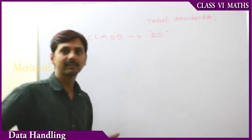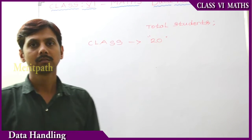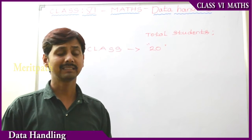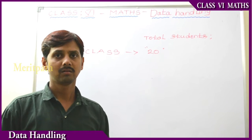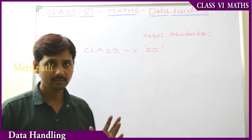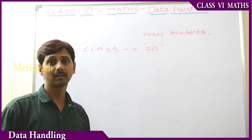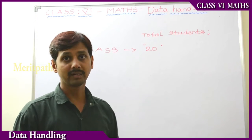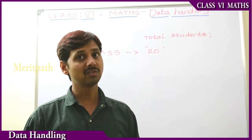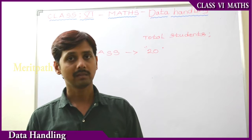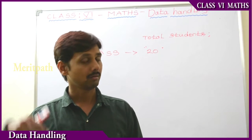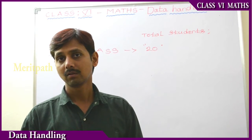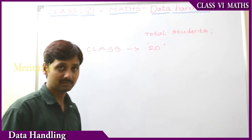There are quite a few students in the class. So we have a test, and all the students got different marks. One student got 19 marks, another student got 18 marks, and 16, 15, 14, and some of them got 13 marks like that. The 20 students' marks were given.